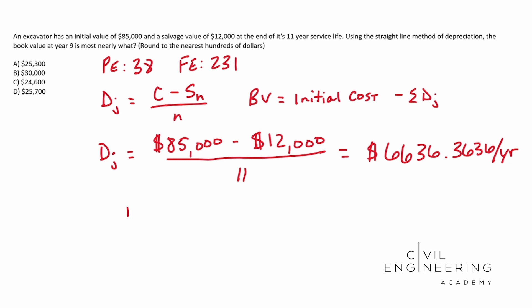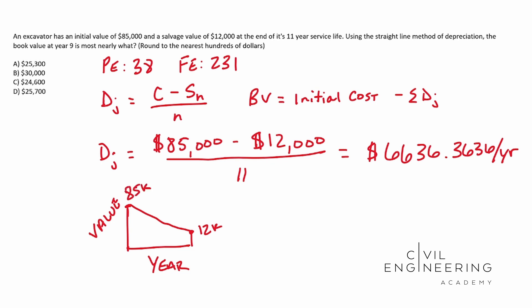If I draw you a quick graph: on the X axis we have years, and on the Y axis we have value — the value of our equipment. We start off at $85,000 and it depreciates at a linear rate, stopping at $12,000 salvage value. This is year zero on the left and year 11 on the right. What we just solved for is the slope of that line.